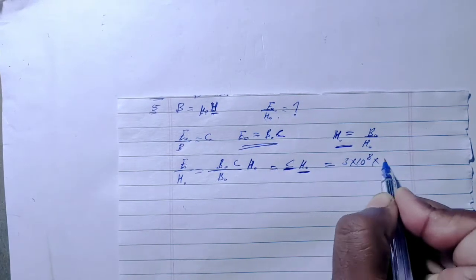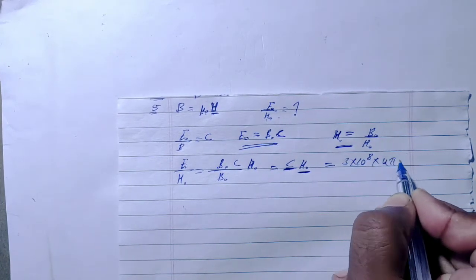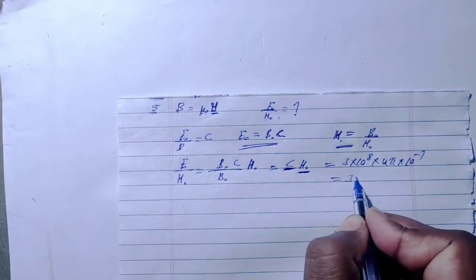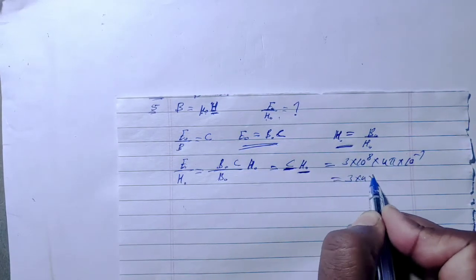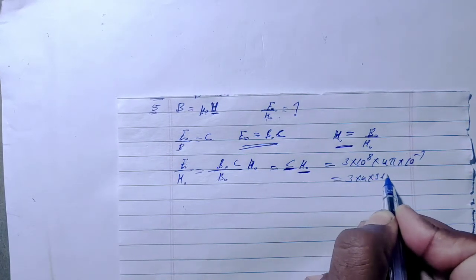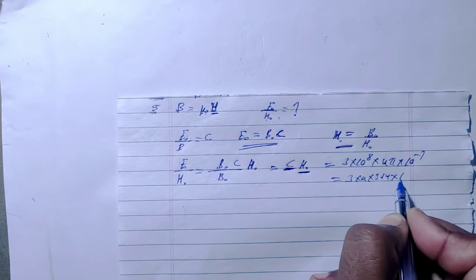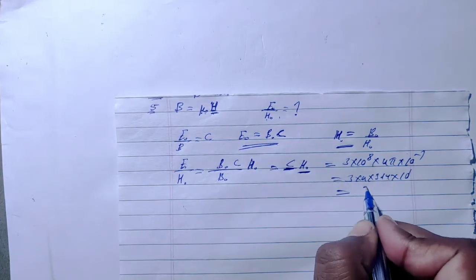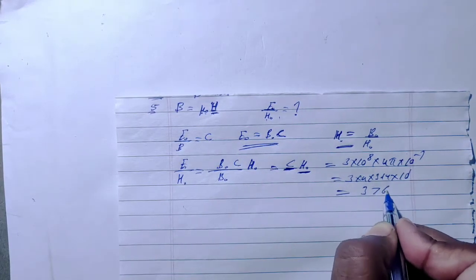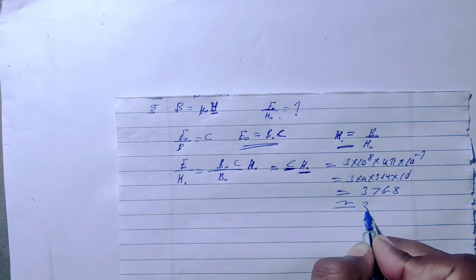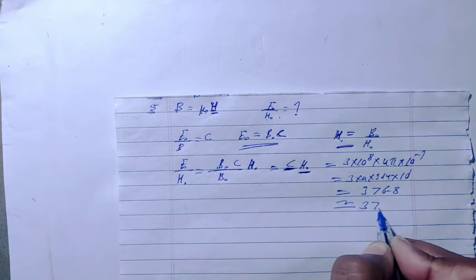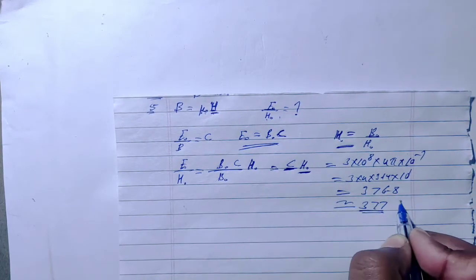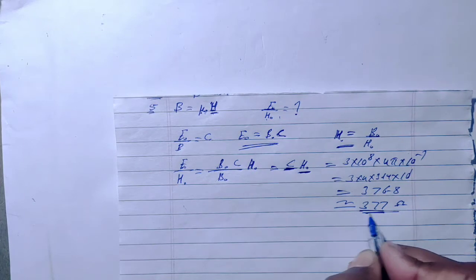Putting in the values: c is 3 times 10 to the power 8, and mu-naught is 4 pi times 10 to the power minus 7. Multiplying gives approximately 3 times 4 times 3.14 times 10 to the power 1, which works out to approximately 376.8, roughly 377.